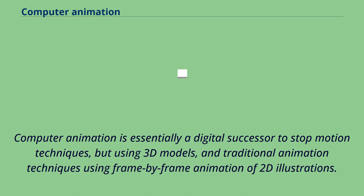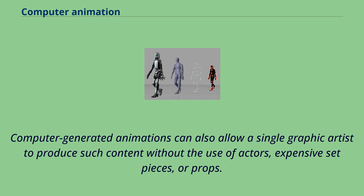Computer animation is essentially a digital successor to stop-motion techniques, but using 3D models, and traditional animation techniques using frame-by-frame animation of 2D illustrations. Computer-generated animations can also allow a single graphic artist to produce such content without the use of actors, expensive set-pieces, or props.